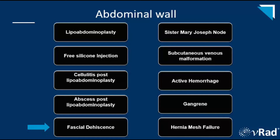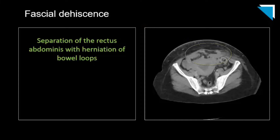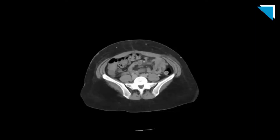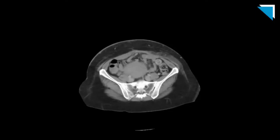Moving away from cosmetic procedures and on to obstetrics briefly. In this single axial image from a contrast-enhanced CT scan in a patient with recent cesarean section, we see separation of the rectus abdominus muscles with herniation of multiple loops of non-distended, non-obstructive small bowel through the abdominal wall defect, compatible with fascial dehiscence. The full image shows the extent of the rectus abdominus separation in the midline at the level of the linea alba.